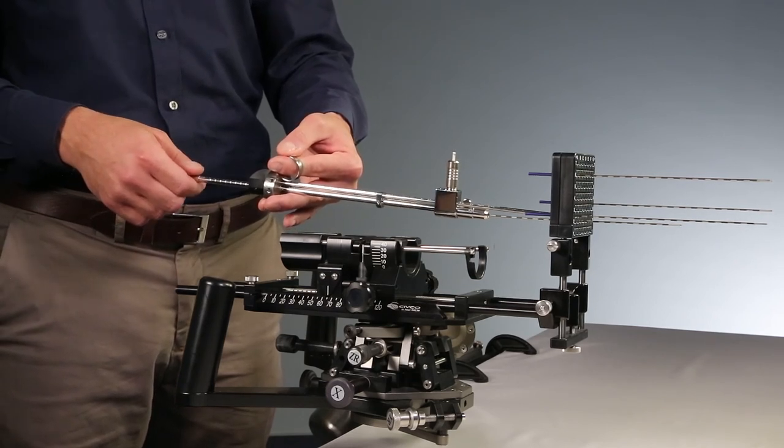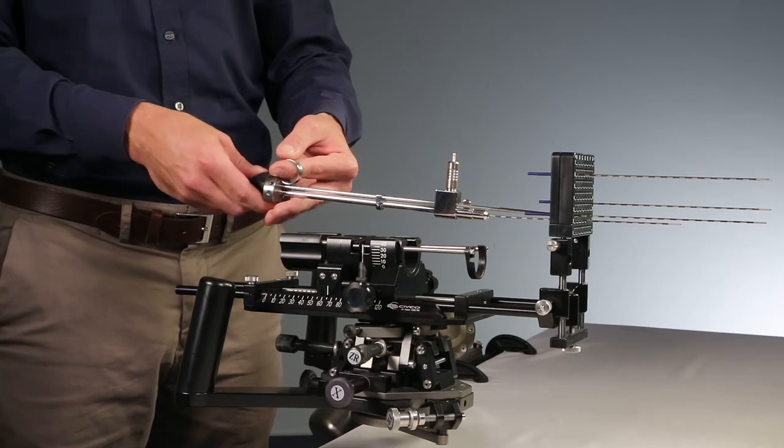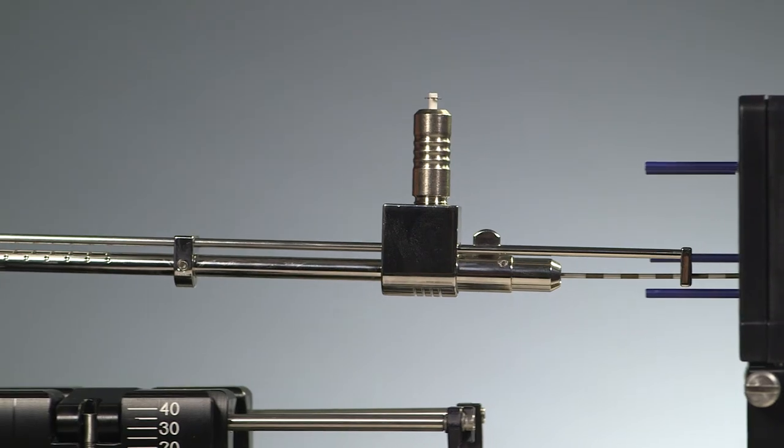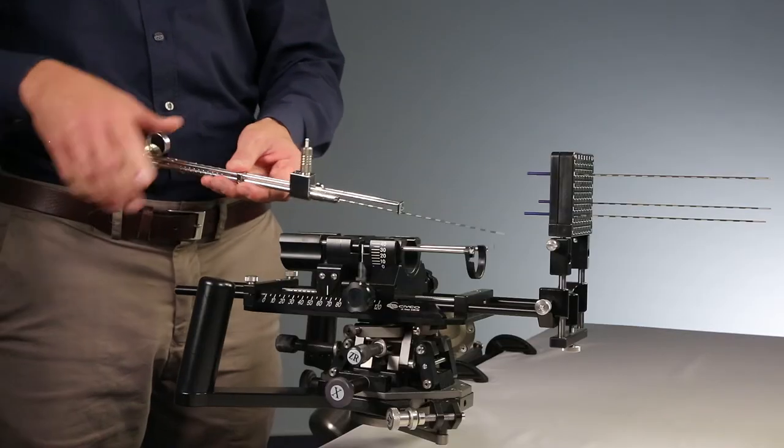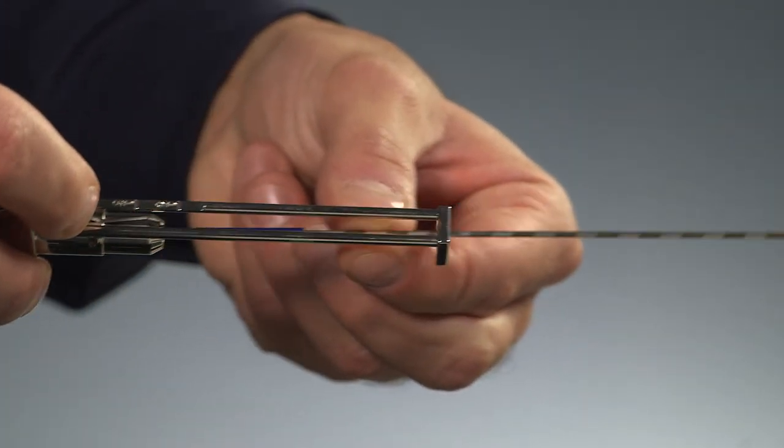Once the number of seeds per needle are placed, pull the applicator with the needle out of the template and disconnect the needle from the applicator.